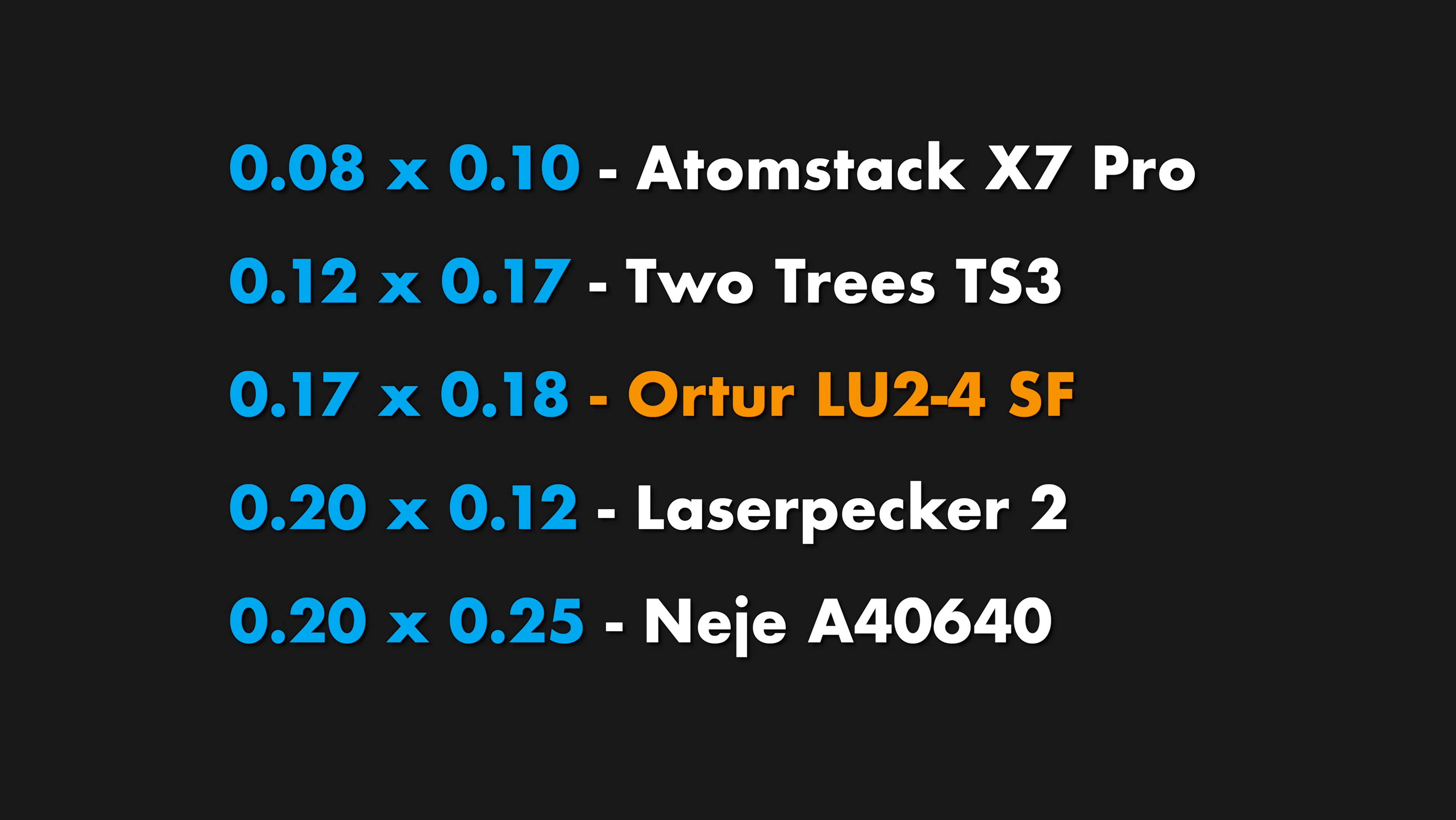So I'm finding something pretty similar. Actually, in the X, I'm getting about 0.17 or so. And then the Y, I'm getting about 0.18. So this is a little bit bigger than the two trees TS3, but it's smaller than the laser pecker as well as the Niji. So kind of right in the middle. Again, this is for the short focus. So the long focus module, as well as the LU2-2 are going to be a little bit different as well.